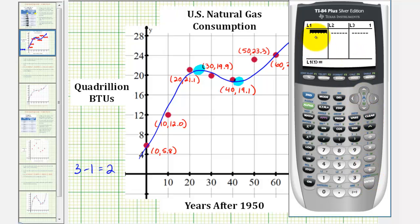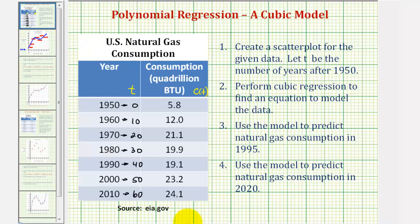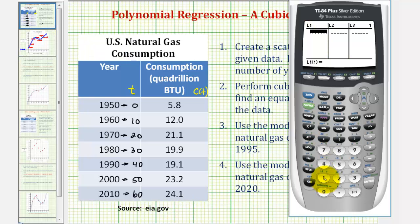And now we'll enter the T values in L1, and the consumption values, or C of T values, in L2. So let's go back to the table. And we have zero, 10, and so on, all the way to 60.